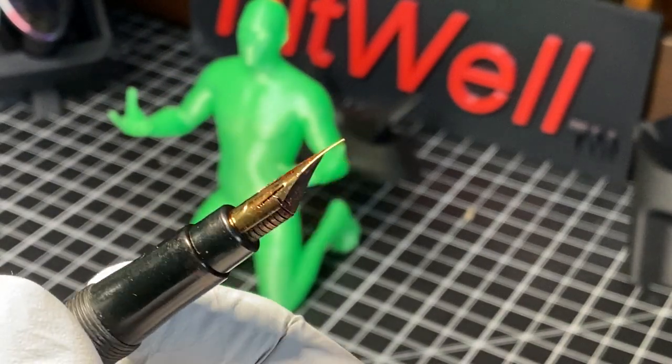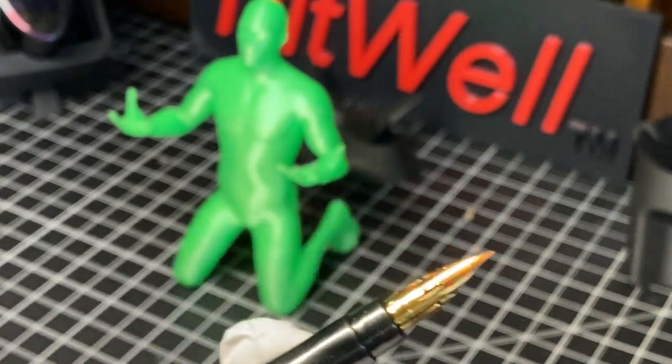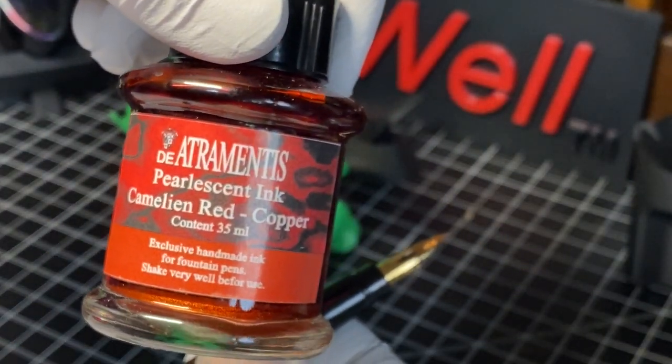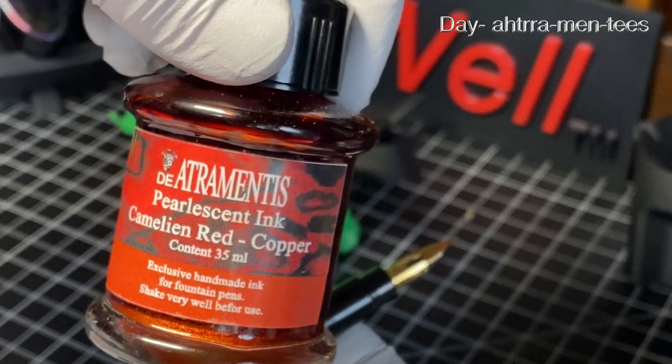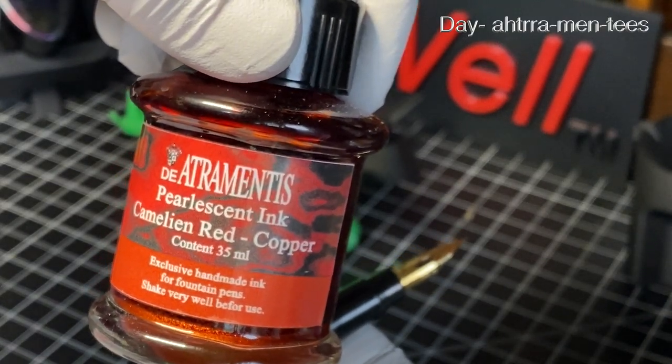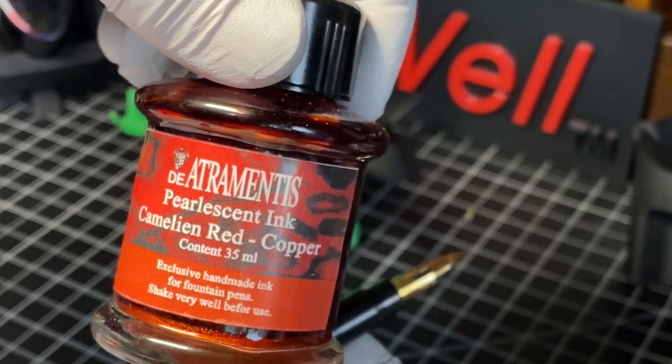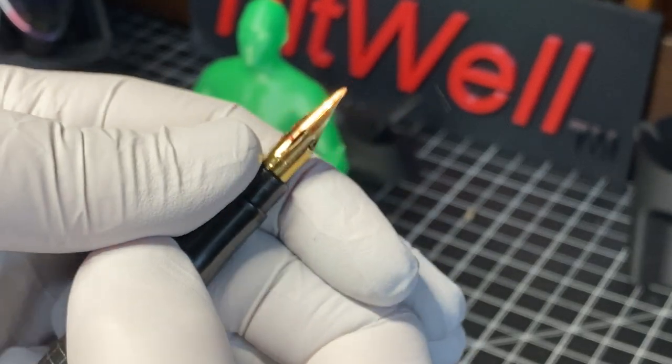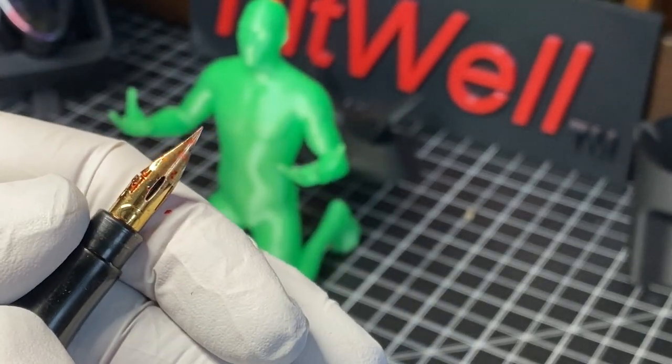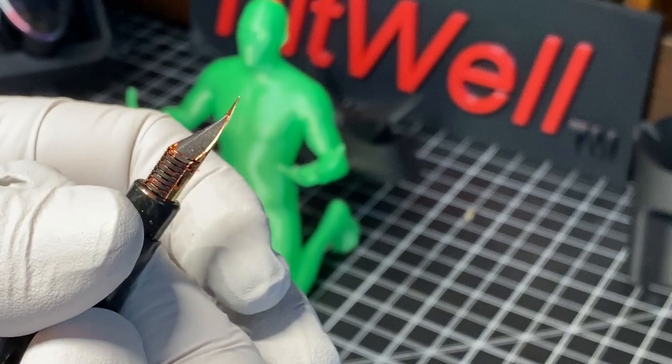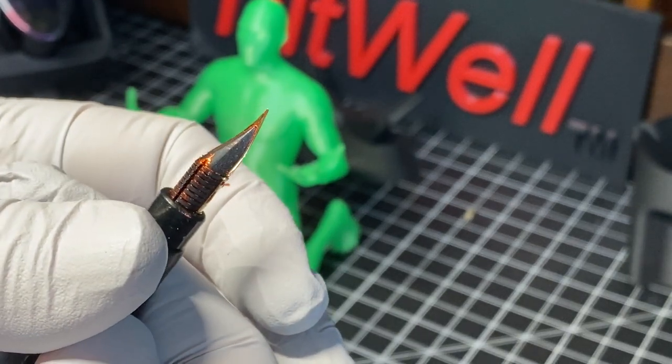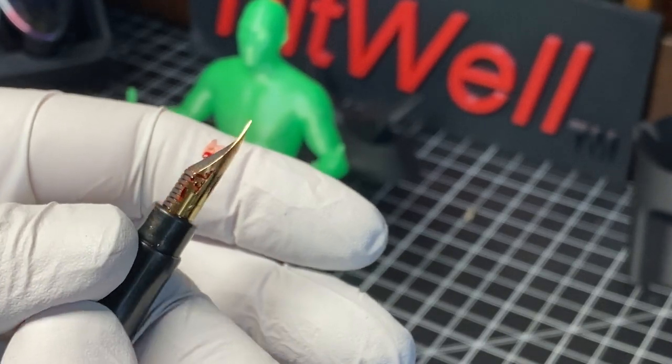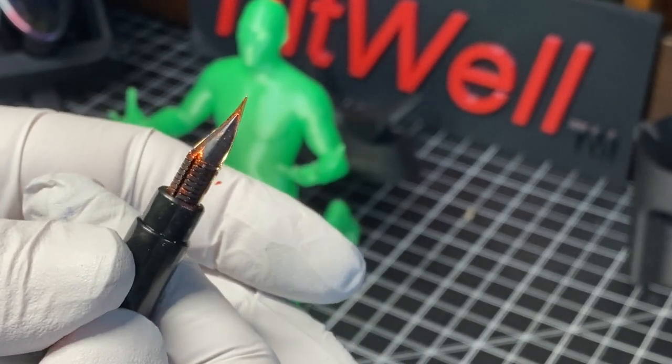I have inked this up already. By the way, the ink that I'll be demonstrating this with is, I don't know how to pronounce this, Deatramentis, pearlescent ink, chameleon red copper. I wonder how you really say that. Because when you can flex a lot, why not use a shimmer ink? Especially if it's not a really super expensive pen. So you won't ruin anything. But there's nothing in here that can't be cleaned out really well. So I'm not really worried about it.